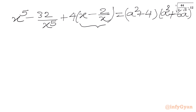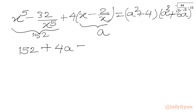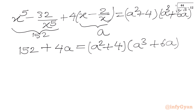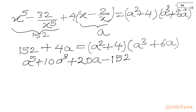Now from equation 3, x⁵ − 32/x⁵ = 152, so substituting: 152 + 4a = (a² + 4)(a³ + 6a). Expanding the right hand side gives the quintic equation: a⁵ + 10a³ + 20a − 152 = 0.